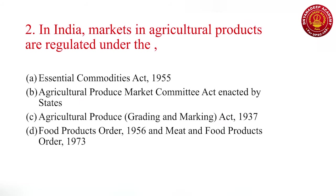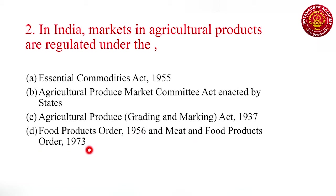Next question: in India, markets in agricultural products are regulated under which of the following? The Essential Commodities Act of 1955, the Agricultural Produce Market Committee Act enacted by states, the Agricultural Produce Grading and Marketing Act of 1937, the Food Products Order of 1956, and the Meat and Food Products Order of 1973. The correct answer is the Agricultural Produce Market Committee Act enacted by various states.